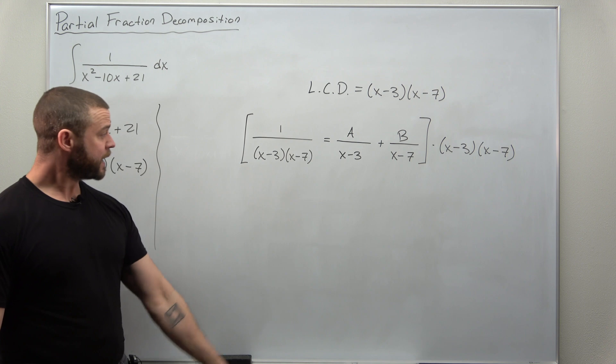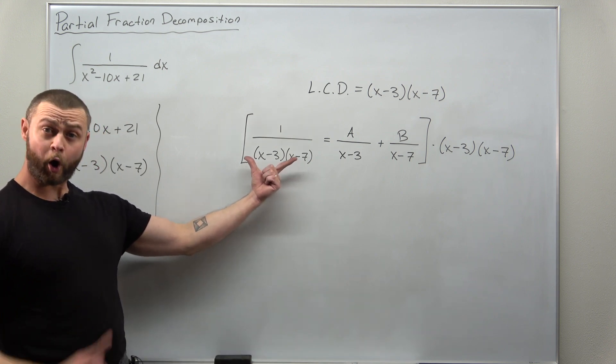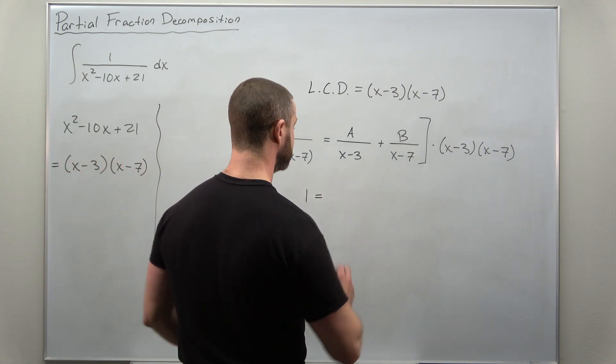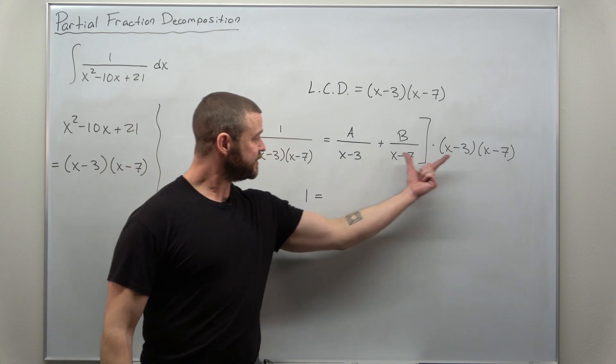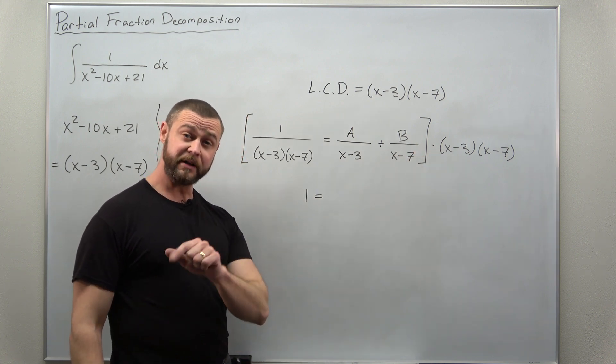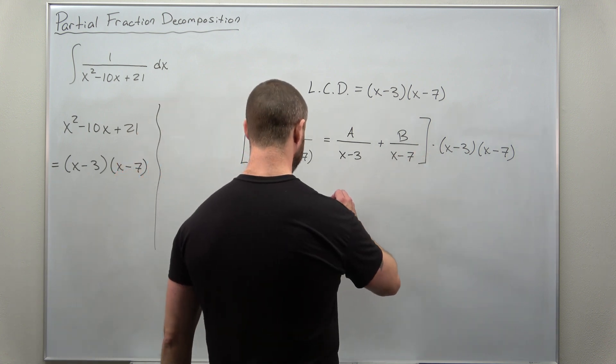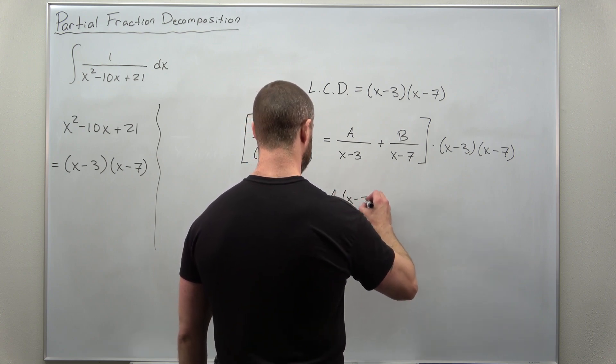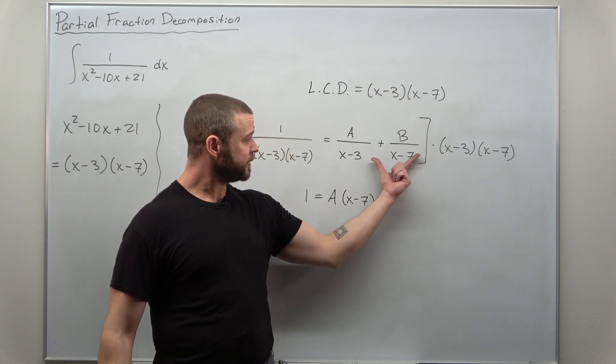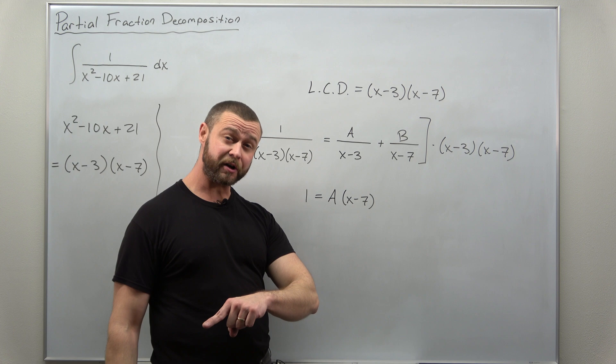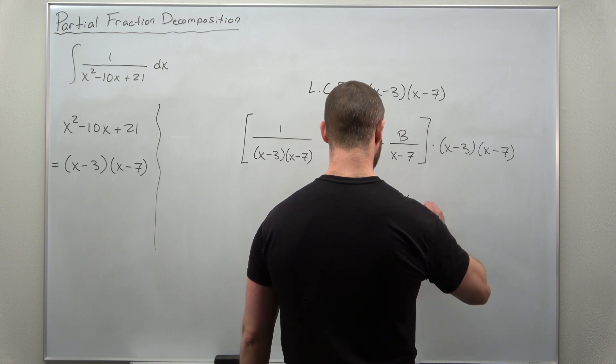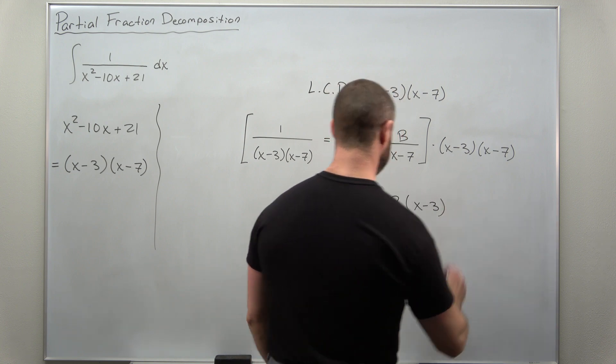And notice when I multiply that to the left side, all the factors cancel completely leaving me with the numerator 1. And when I multiply that LCD to the fraction involving A, now it's the x minus 3 factors that cancel, leaving you the x minus 7 factor. So we'll get A times x minus 7. And now this LCD multiplying the B term, it's the x minus 7 terms that cancel, leaving you the x minus 3. So we'll get B times x minus 3.